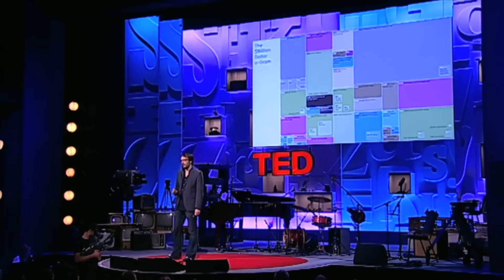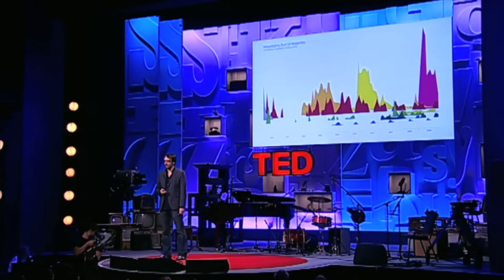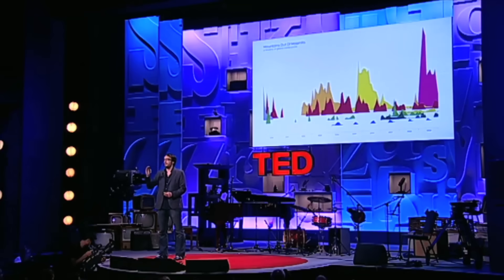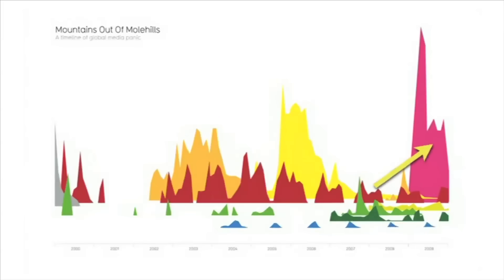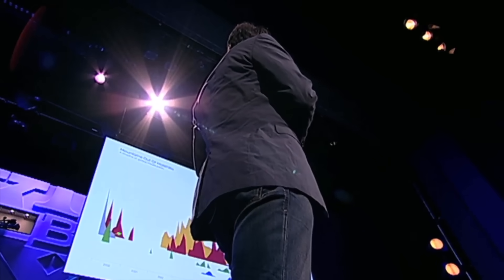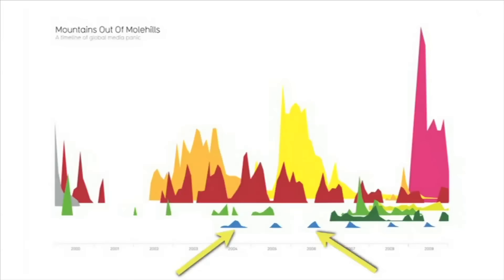I want to show you another landscape now. I want you to imagine what a landscape of the world's fears might look like. This is 'Mountains out of Molehills,' a timeline of global media panic. The height here is the intensity of certain fears as reported in the media. Swine flu — pink. Bird flu. SARS. The millennium bug — terrible disaster. These little green peaks are asteroid collisions. And in summer here, killer wasps.